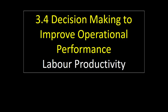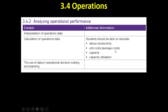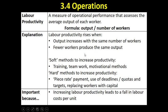This video is going to look at labour productivity. We're now working through this section of the AQA AS and A-level specification, looking at the interpretation of operations data and this first bullet point on different methods of analysing operational performance. Labour productivity is a measure of operational performance that assesses the average output of each worker. The formula is one you need to memorise: we take the total output of an organisation and divide it by the number of workers taken to produce that output.